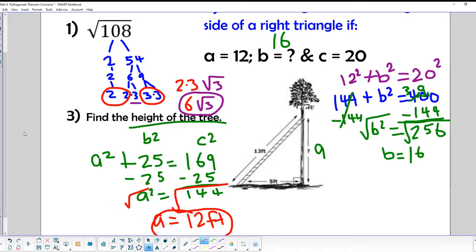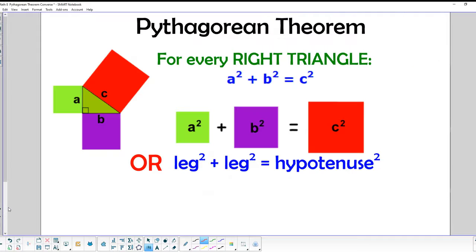So we know that the Pythagorean theorem says that for every single right triangle that you can come up with, the length of the two shortest sides squared and added together is equal to the length of the longest side, or the hypotenuse, squared. So that relationship will always exist in a right triangle.